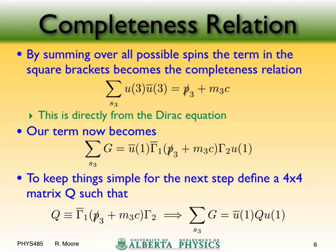Because of this completeness relationship, as long as I'm summing over all the spins of particle 3, this gives me the completeness relation, so I now have u-bar-1, gamma-1-bar, then P3-slash plus M3c, then gamma-2, then u1. Summing over all spin states of particle 3 gives me this relationship. I'll define Q as gamma-1-bar times (P3-slash plus M3c) times gamma-2 — just defining a 4×4 matrix to keep things simple.